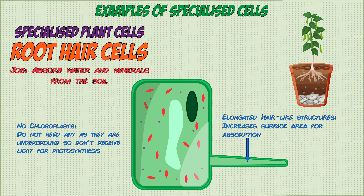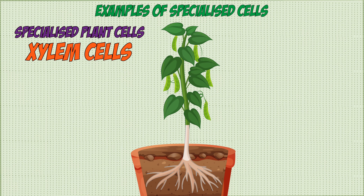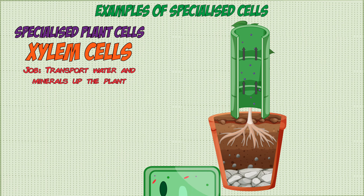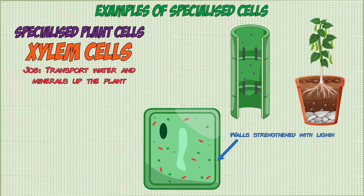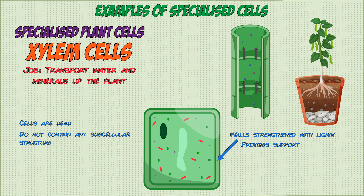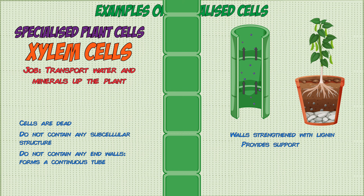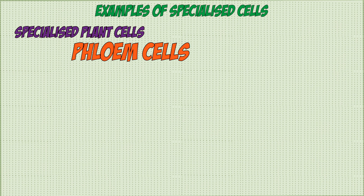Xylem cells are another type of specialized plant cell, making up the xylem — a long tube that runs through the plant and is adapted to transport water and minerals from the roots to the rest of the plant. They have thick walls made stronger with a substance called lignin, which provides support. The cells in the xylem are dead, meaning they contain no cytoplasm or other subcellular structures and have no end walls, allowing them to join together to form a continuous tube for more effective transport.